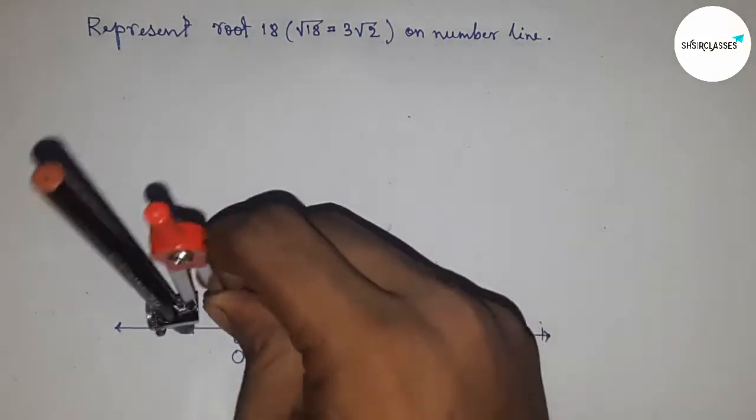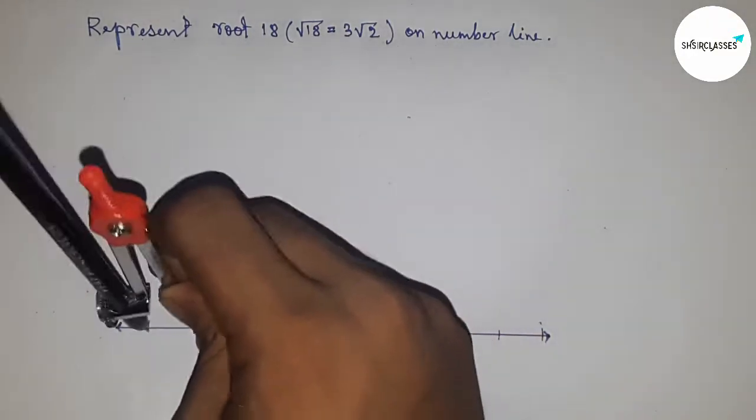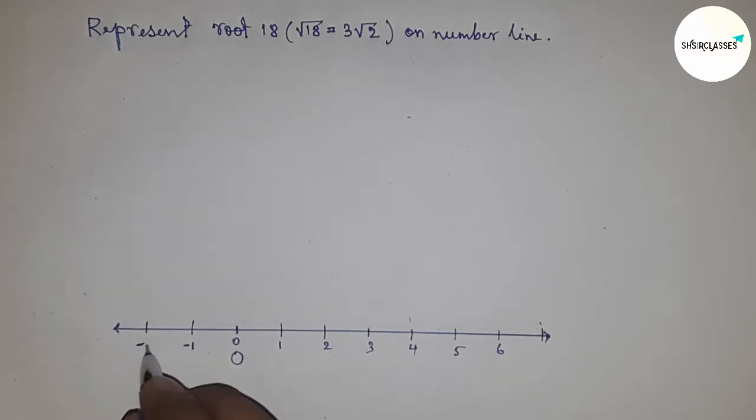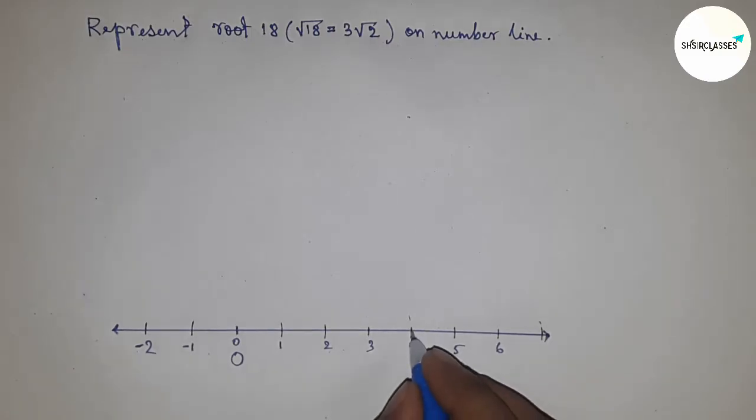Putting the compass here and cut here and cut here. So this is 0, 1, 2, 3, 4, 5, 6, and this side -1 and -2, and so on. Next, we have to first construct √17.